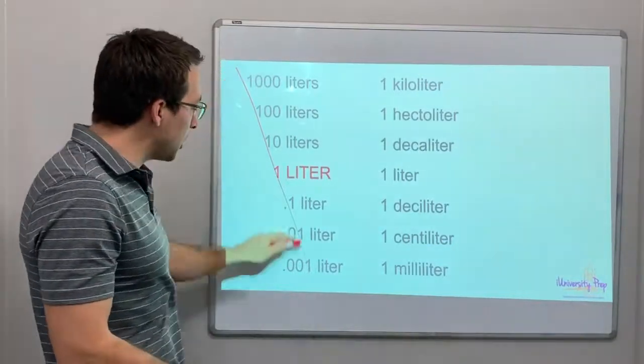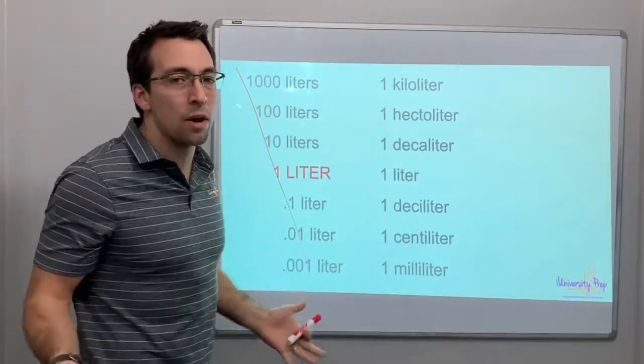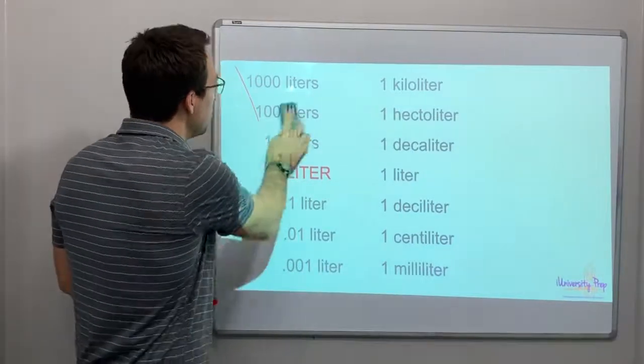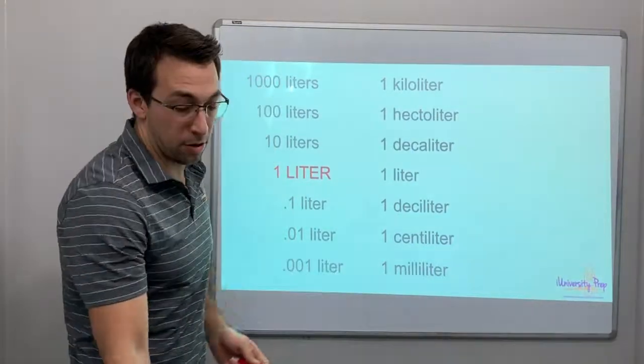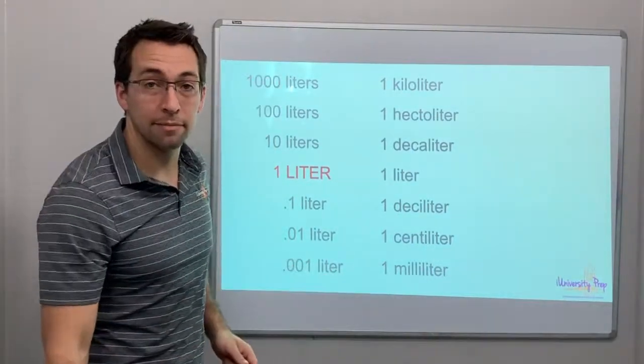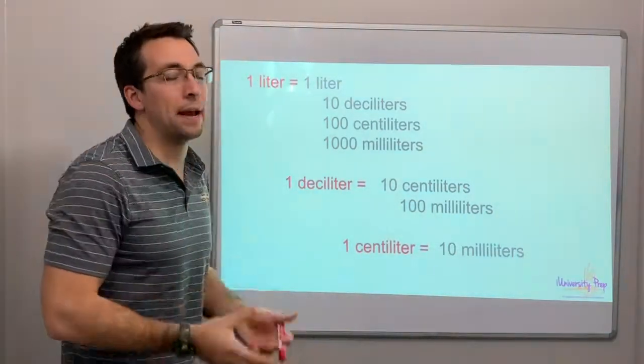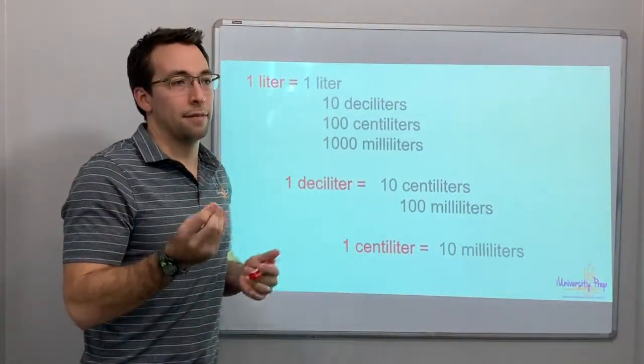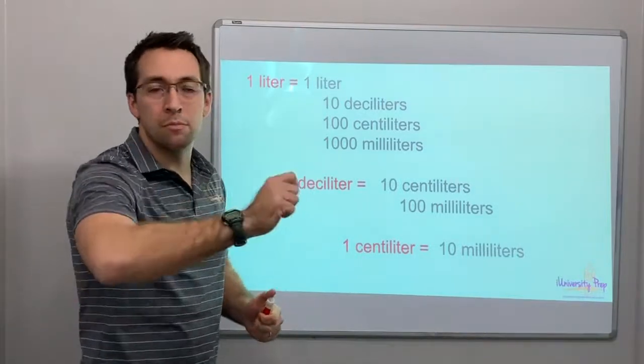So again, each of these is just separated by one place value. All you have to do is move the decimal and you either get bigger or smaller. It's awesome. The metric system, again, is just based on a place value of ones and zeros and moving the decimal.